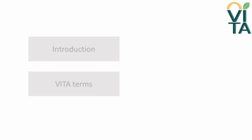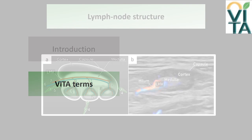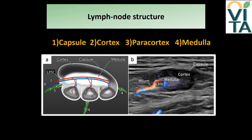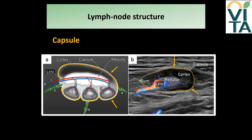Before going through all parameters in detail, a few hints about lymph node structure will help understand what follows. The node structure consists of four zones: capsule, cortex, paracortex, and medulla. The capsule is composed of dense connective tissue and surrounds the lymph node. Sometimes it is possible to recognize it on ultrasound as a thin hyperechogenic line.